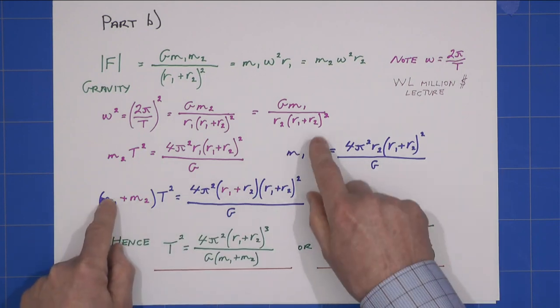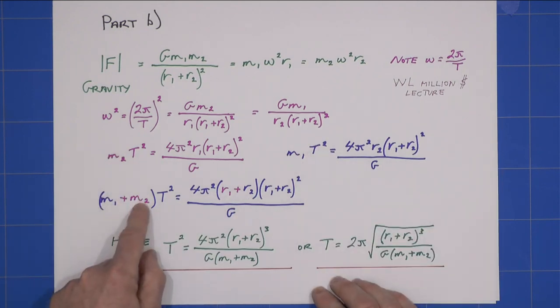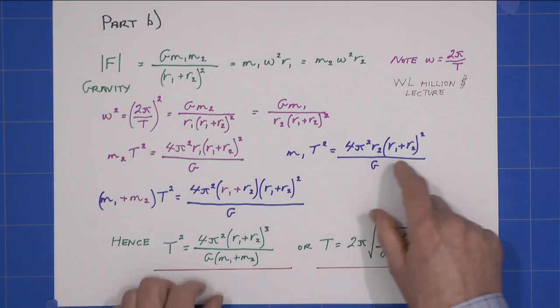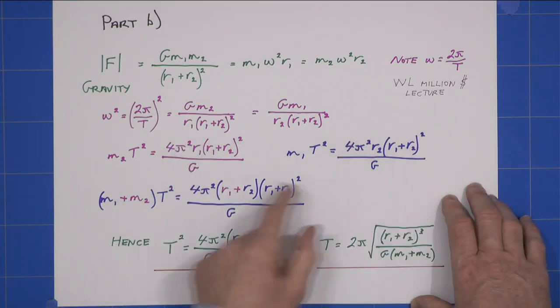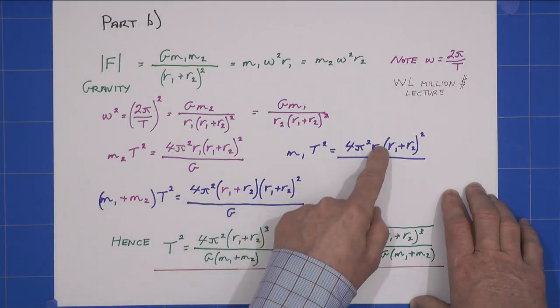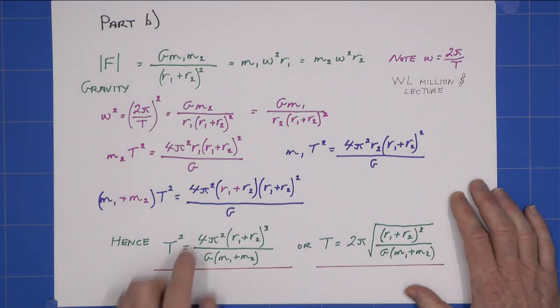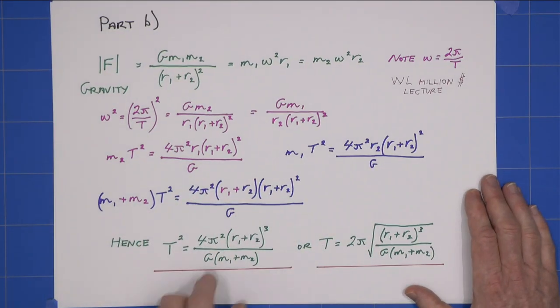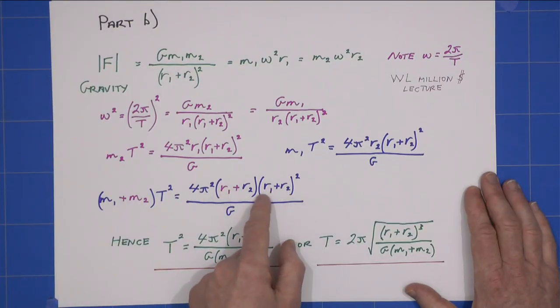Note I've got m1 coming from this equation and m2 from that to give me this. From these two equations, most of it's common, but I get r1 coming down here and r2 coming down there. So that's how I get this, but then you see I've got (r1 + r2)³.